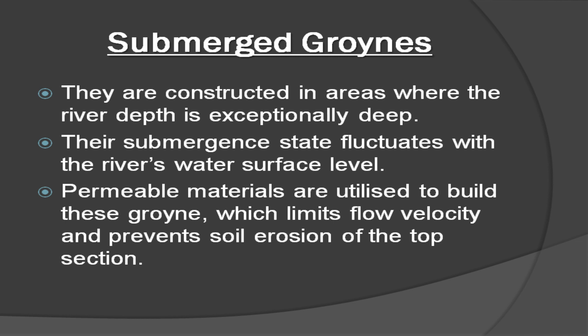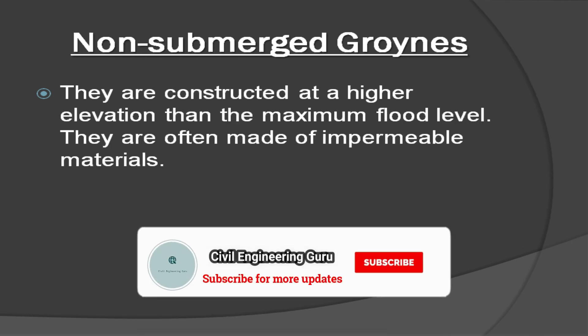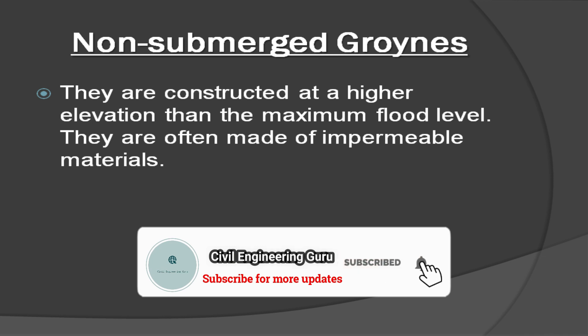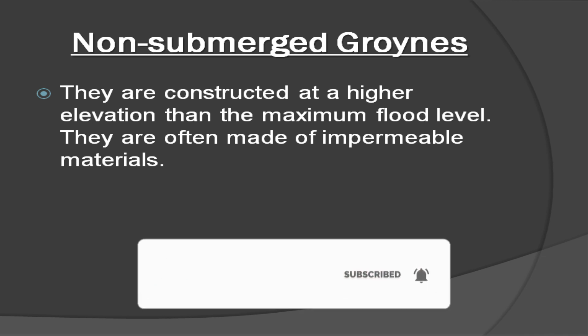Submerged groins are constructed in areas where the river depth is exceptionally deep. Their submergence state fluctuates with the river's water surface level. Permeable materials are utilized to build these groins, which limits flow velocity and prevents soil erosion of the top section.